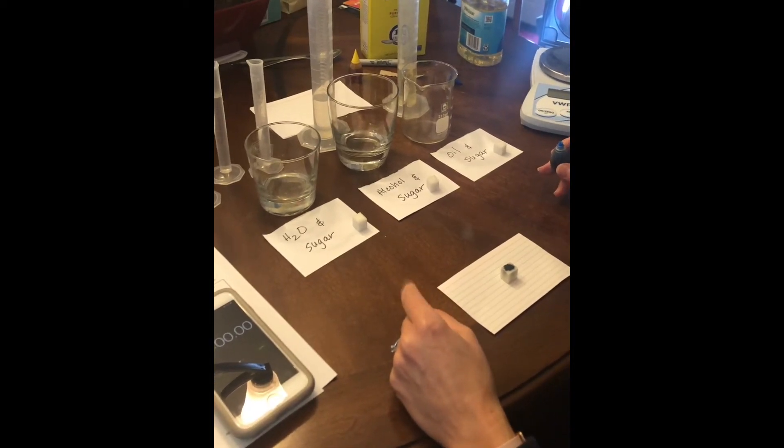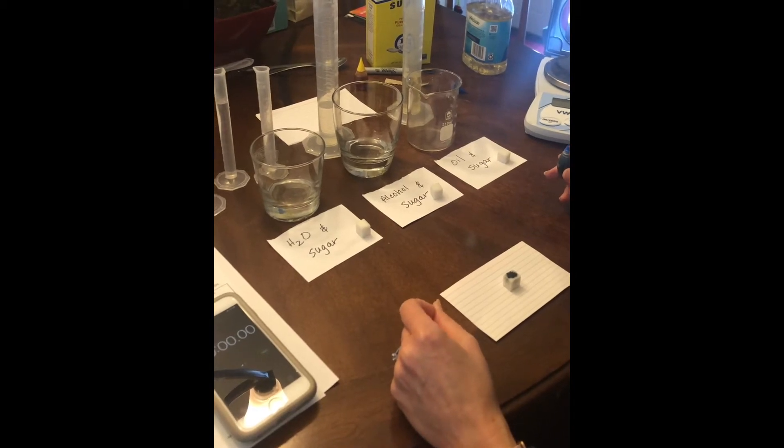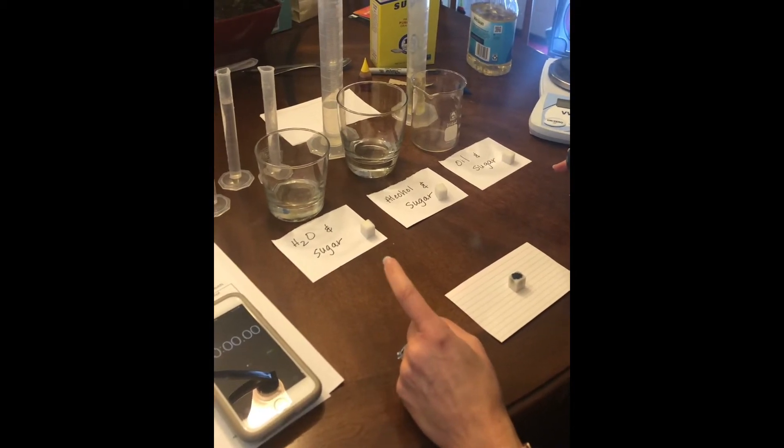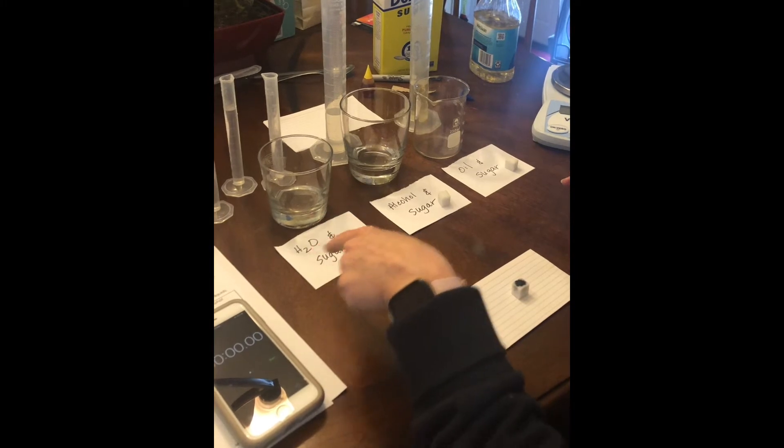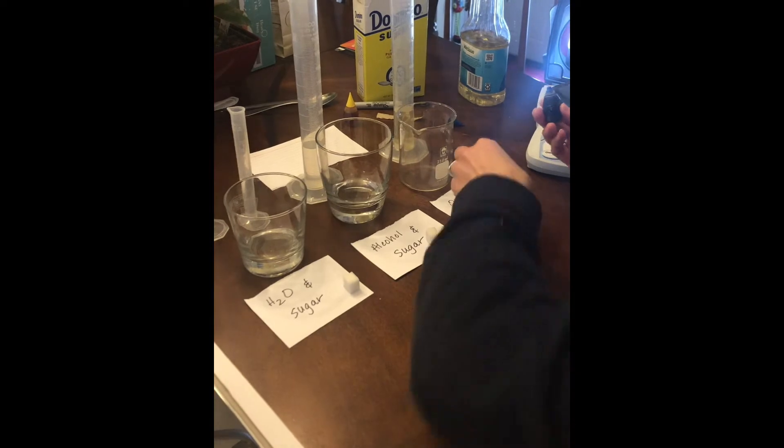All right ladies and gentlemen, this is how I set up the dissolving a colored sugar in water, alcohol, and oil. As you can see, I've labeled the glasses with the setup. I'm gonna add the food coloring to each sugar cube.